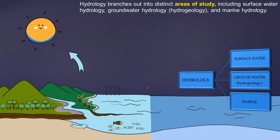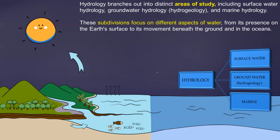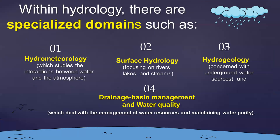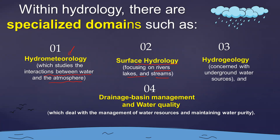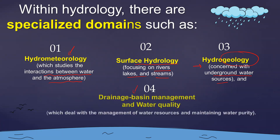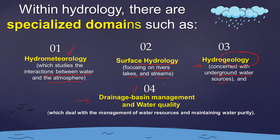Hydrology branches out into distinct areas of study. Subdivisions focus on different aspects of water — surface water, groundwater, and marine. Within hydrology, the specialized domains are: hydrometrology, which studies interactions between water and atmosphere; surface hydrology, focusing on rivers, lakes, and streams; hydrogeology, which covers underground water and sources like aquifers and aquifuge; and drainage basin management and water quality, which are very important for planning and policy making.